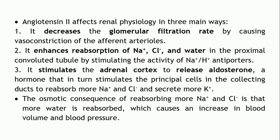Angiotensin II affects renal physiology in three ways. First, it decreases GFR by causing vasoconstriction of the afferent arterioles — reducing blood flow into the glomerulus and therefore reducing filtration rate. Second, it enhances reabsorption of sodium chloride and water in the PCTs by stimulating the activity of sodium-hydrogen antiporters.